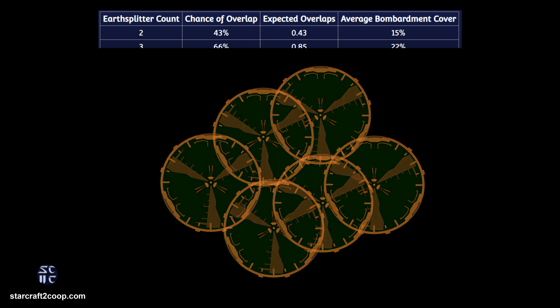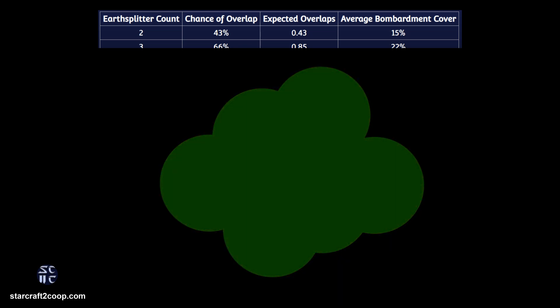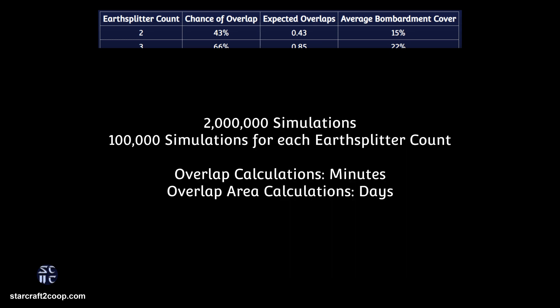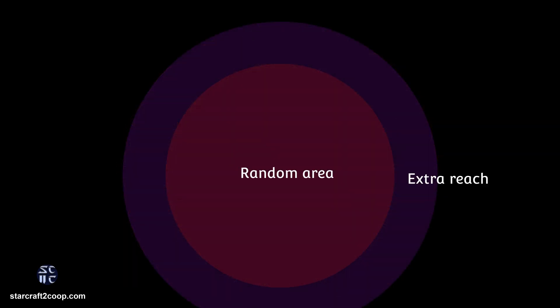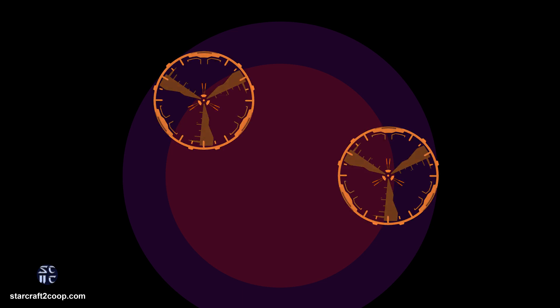Now we get to the tricky part: the total area covered by the overlapping circles. This is the most computationally expensive part. To put it in perspective, the overlap probability calculations using the circle centers took maybe a few minutes for 2 million simulations — that's 100,000 simulations for each Earthsplitter count, with each simulation corresponding to one Earthsplitter salvo. The total overlapping area calculations took around a few days to complete those same 2 million simulations. One other thing to note is that the total area that can be covered is slightly larger than the random area a bombardment can land in, because a shell can strike near the edge of the possible area circle and cover a small area outside of it.